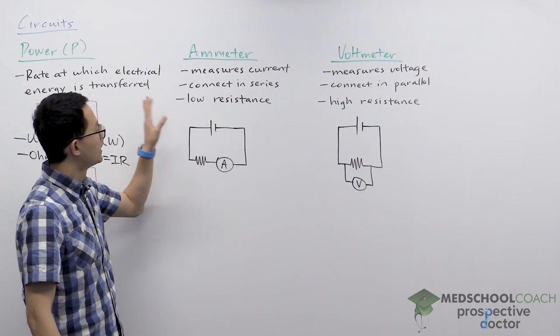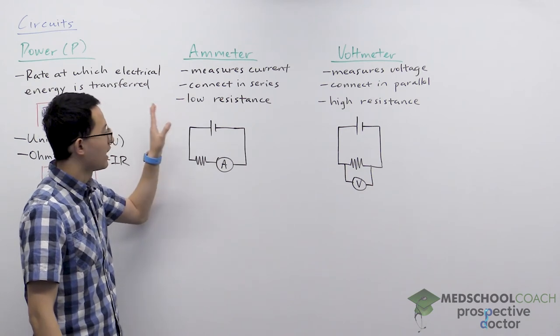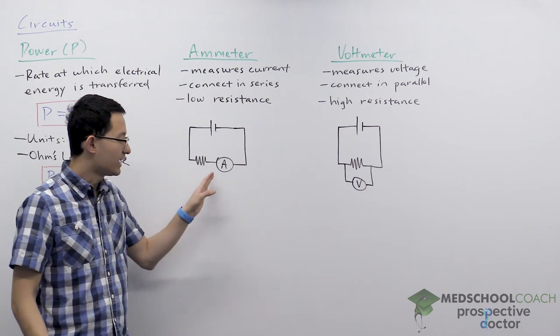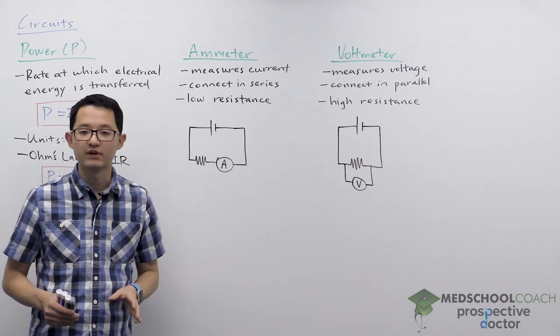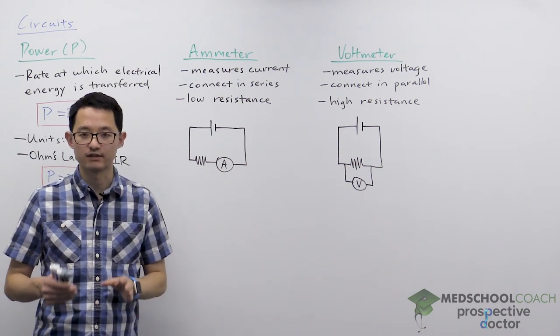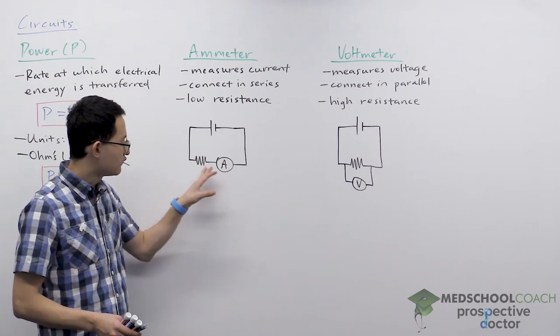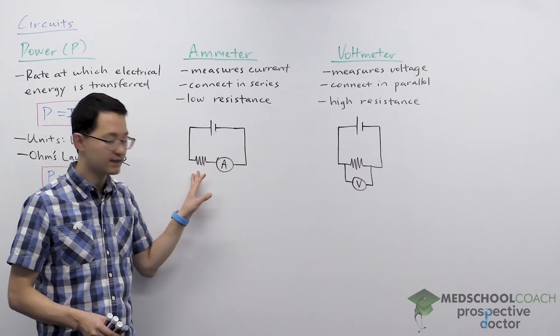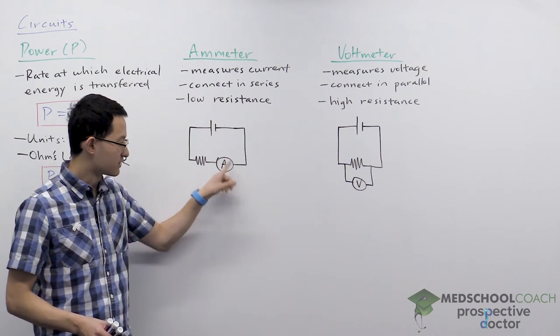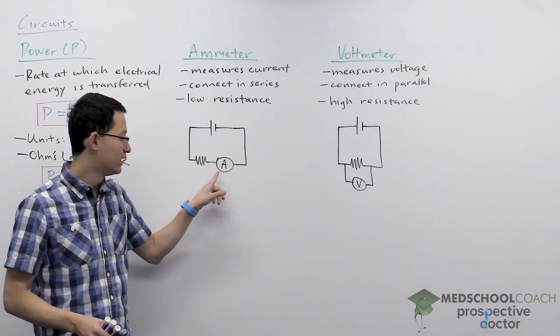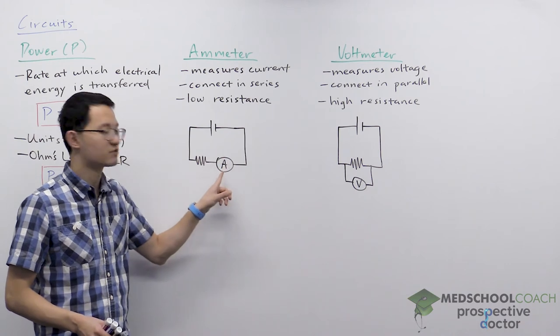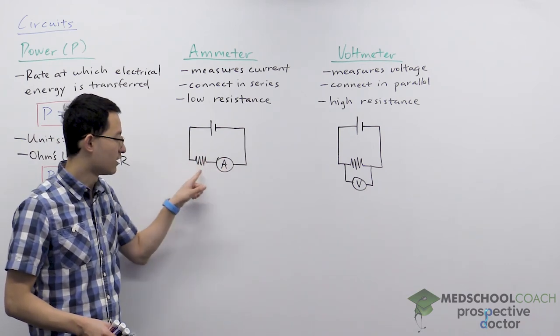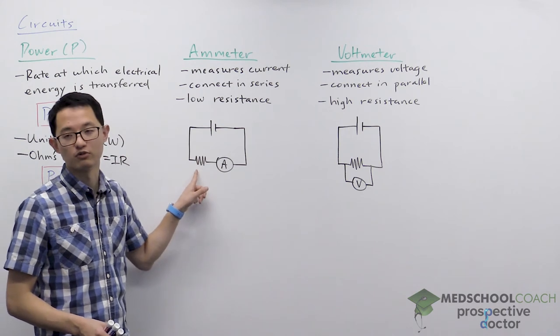In addition, you want your ammeter to have the lowest possible resistance. That's because when you add in one of these meters, you want them to have the smallest possible impact on the circuit. You know that if you connect circuit elements in series, their resistances add. In order for the ammeter's effect to be as small as possible, you want it to have a very small resistance, so the total resistance is essentially unchanged.